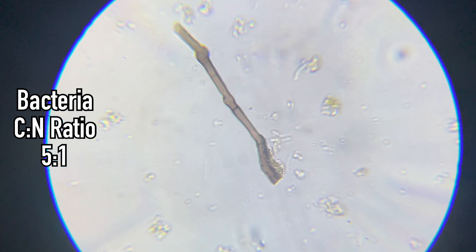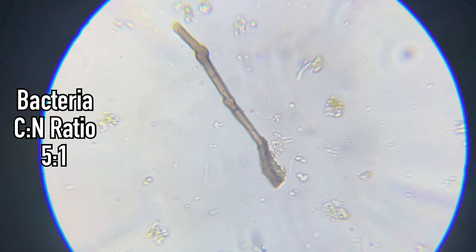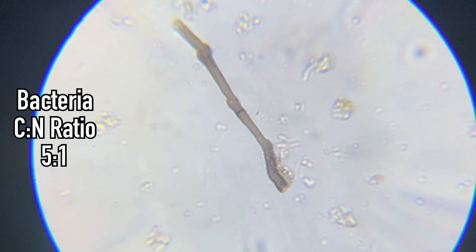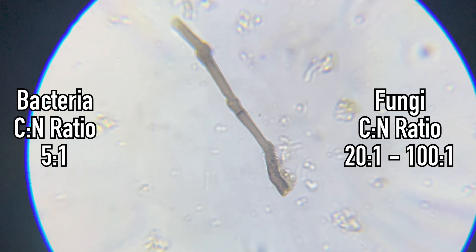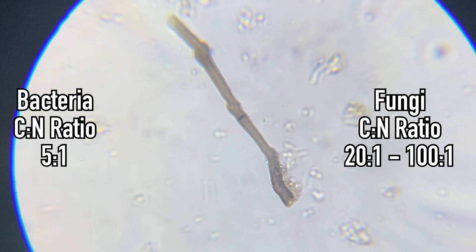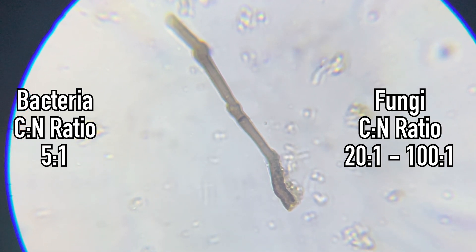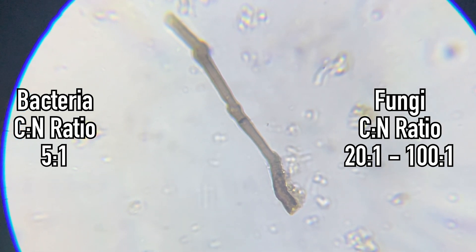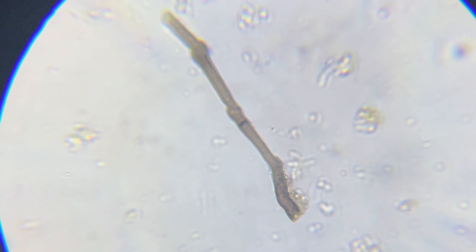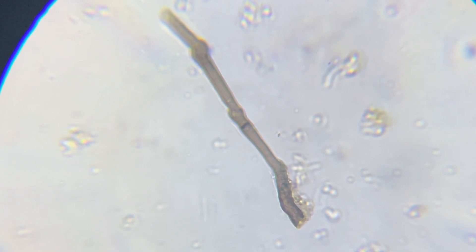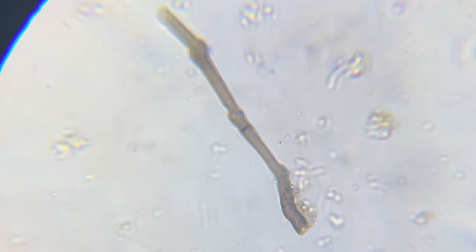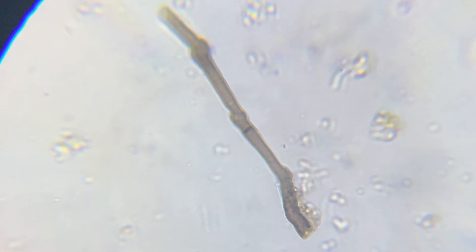Fungi have a much wider carbon-to-nitrogen ratio of 20 to 1, up to 100 to 1. Which is why, when you hear the term carbon sequestration, or carbon gathering, fungi take the cake. They are the other side of the coin when it comes to beneficial organisms, but the most heard of for fungal organisms like mycorrhizae.